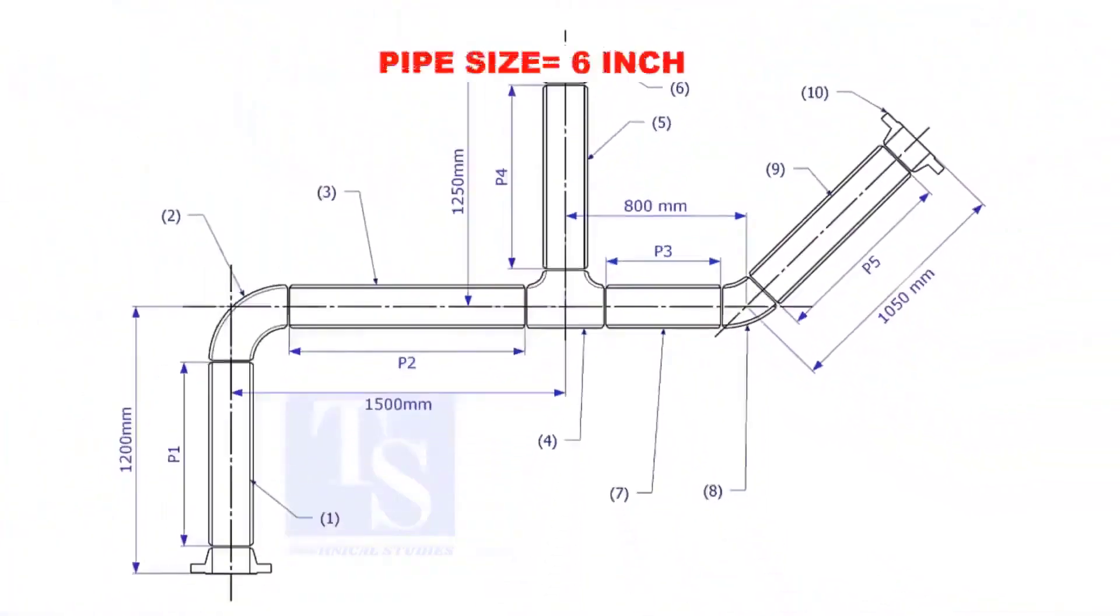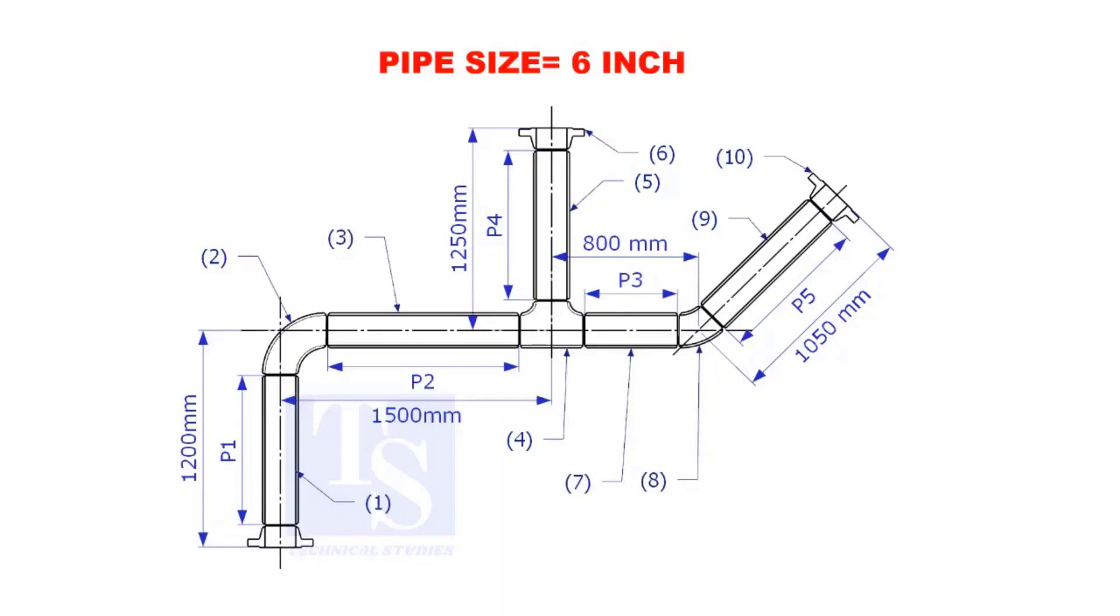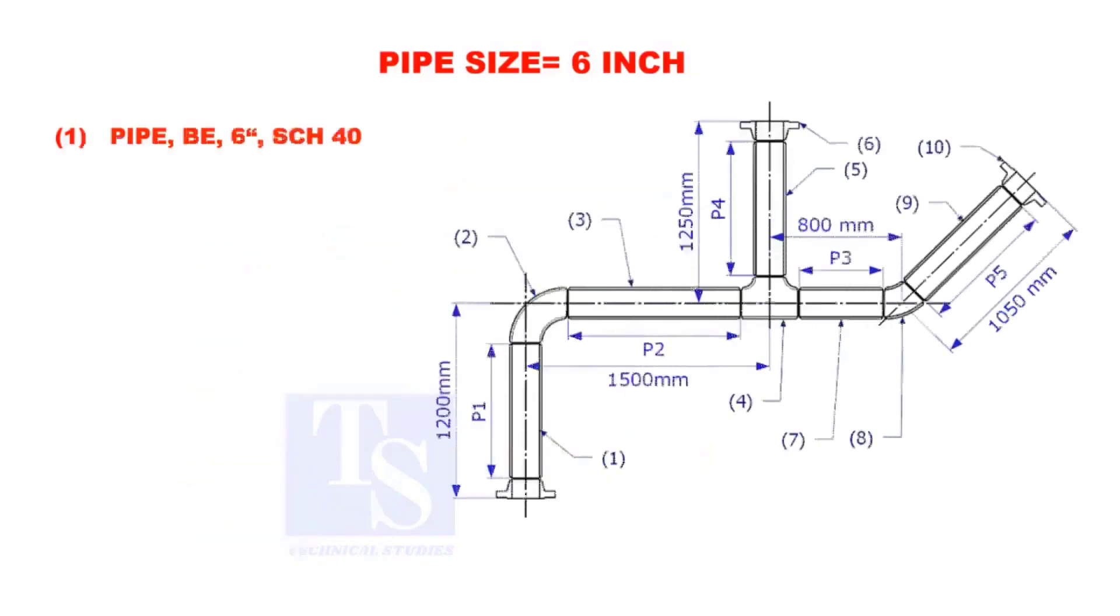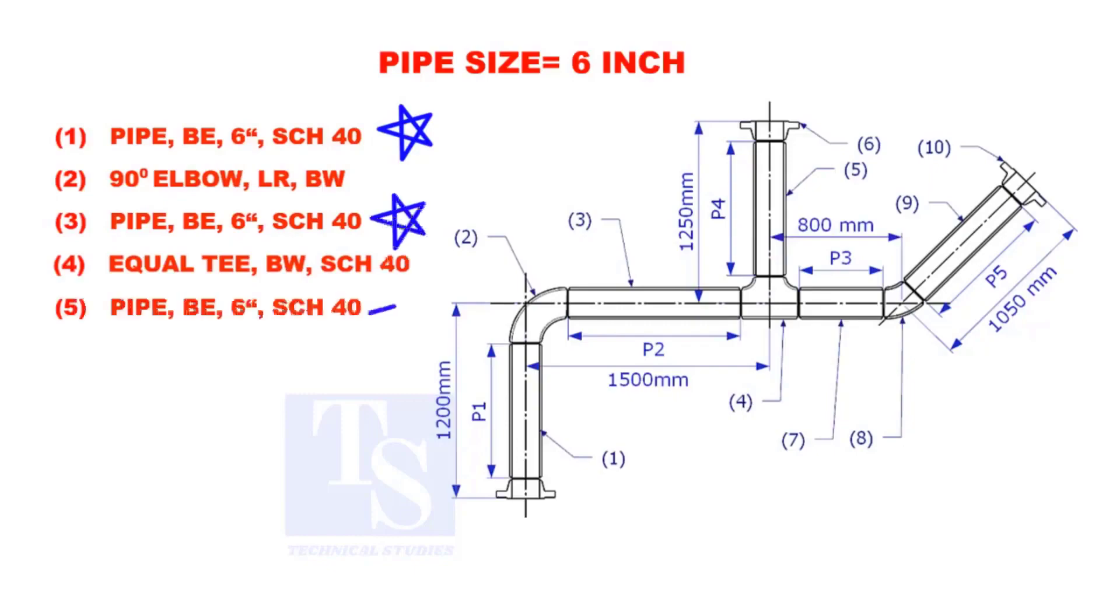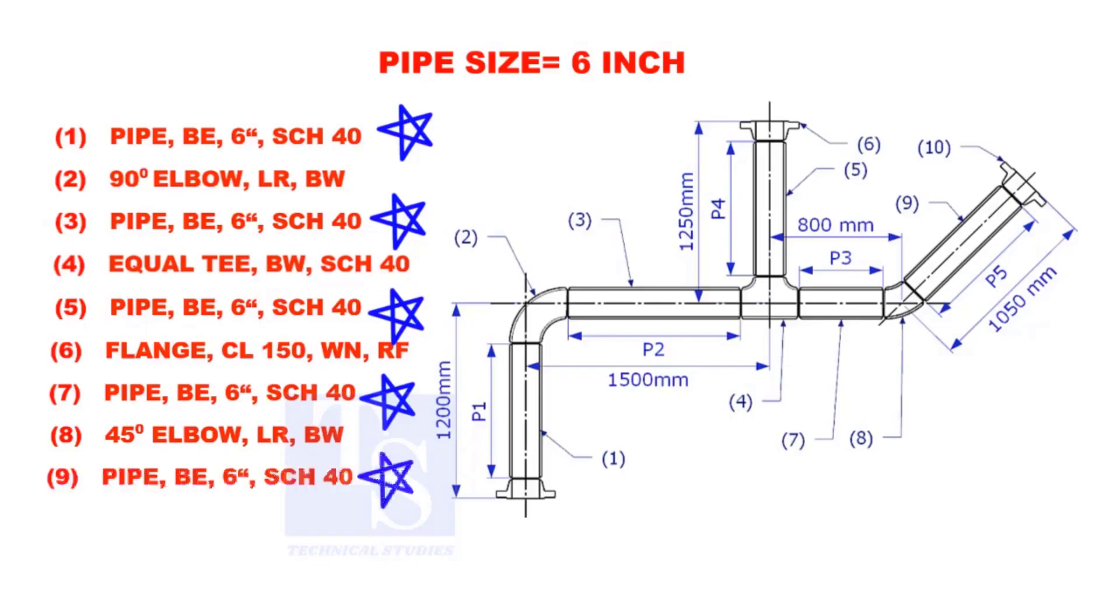Assume that the pipe size is 6 inches. Item numbers 1, 3, 5, 7, and 9 are pipes.